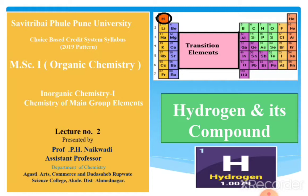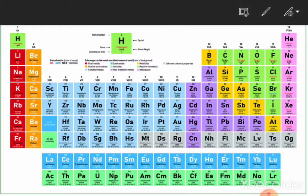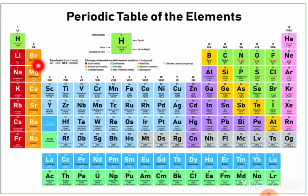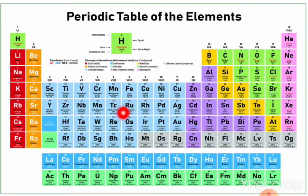Before starting our chapter, we focus on the periodic table. The periodic table is classified into S-block, P-block, D-block, and F-block. The S-block is classified into alkali metals and alkaline earth elements. The P-block elements are called the main group elements. The D-block elements are called transition elements, and the F-block elements are called inner transition elements.